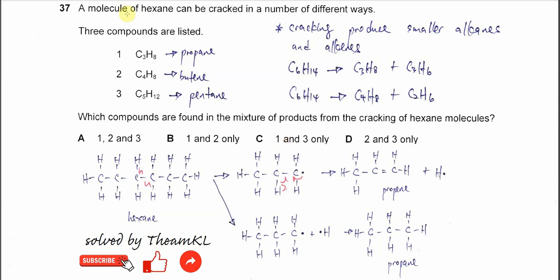Question 37. A molecule of hexane can be cracked in a number of different ways. Three compounds are listed.